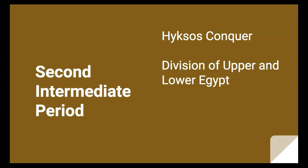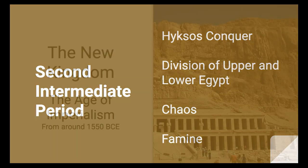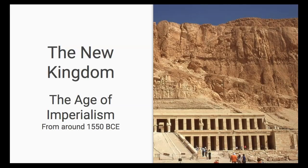The Second Intermediate Period saw the Hyksos divide the people from within, leading to widespread chaos once again. But the Egyptians managed to overthrow them, marking the beginning of the New Kingdom around 1550 BCE.